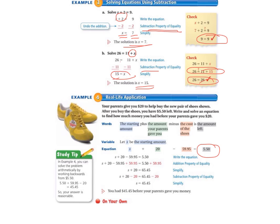So we write our equation. S plus 20 minus $59.95 equals $5.50. And we look and we see that we're going to use the addition property of equality because we want to get S all by itself. And we're going to start with that because the $59.95 is subtracted on the left-hand side. So when we add it, it goes away on the left, and on the right-hand side, it becomes $65.45.